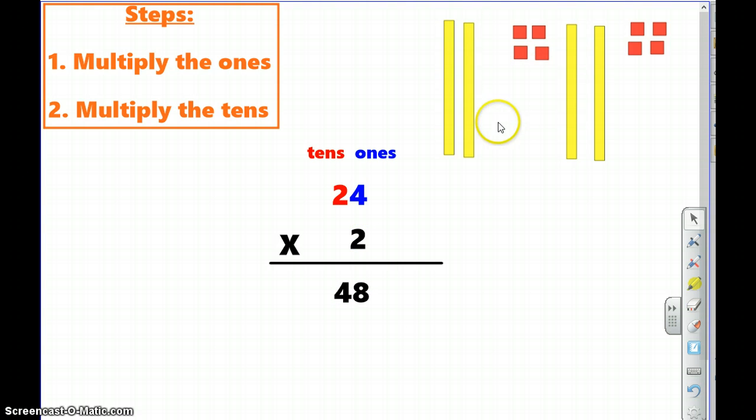Well, let's look up at our place value blocks. We have two times four, so eight in the ones, and two times two tens, or four tens. So also here we see represented 48. So our answer is correct.